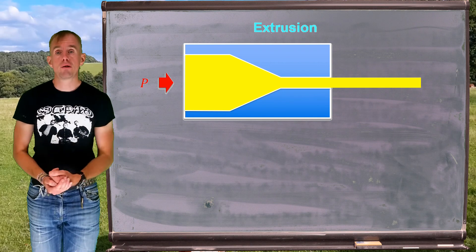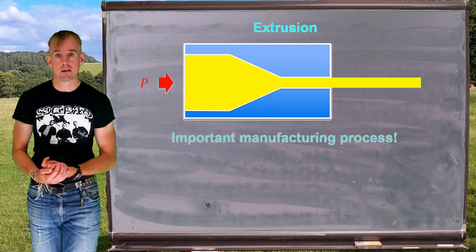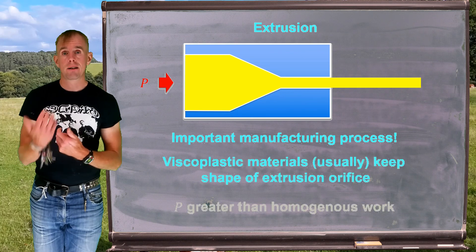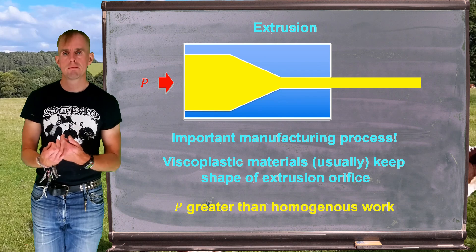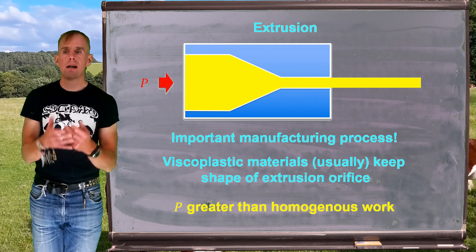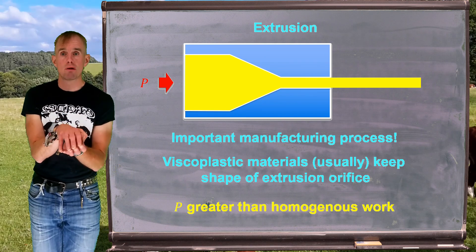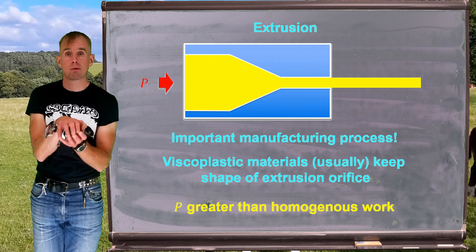So extrusion is used widely for shape-forming materials. And as we said in the last part of this lecture, viscoplastic materials usually, unless there's a processing instability, keep their shape post-extrusion, which is a very useful feature.